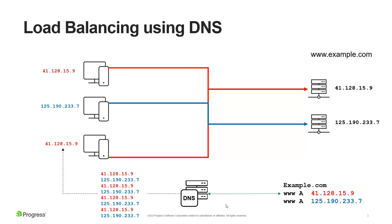Looking at our first slide, this is load balancing using DNS only. This is referred to as DNS round robin, whereby there are two A entries for an FQDN — example.com in this case. The first request goes to the first IP, the second request goes to the second IP. It's quite a simple setup where they literally go one after the other. There's no intelligence behind it, and if one server or IP becomes unavailable, the DNS will continue to hand out that IP address even though there's no server there to connect to.